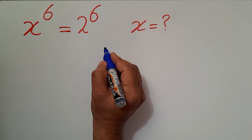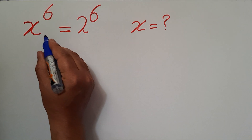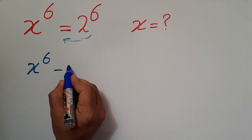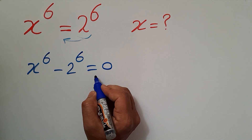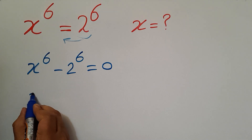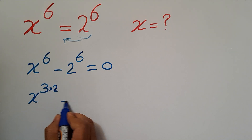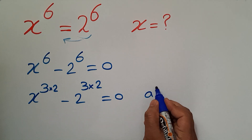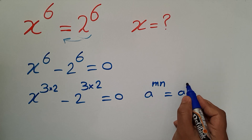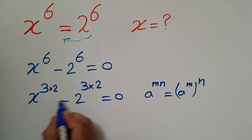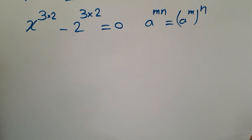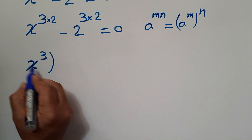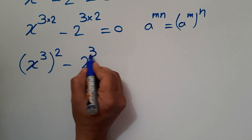Are you ready to solve? Let's go ahead and get started. In the first step, let's move this term to the left hand side: x to the power of 6 minus 2 to the power of 6 equals 0. Since 6 can be written as 3 times 2, we apply the rule a to the power of m·n equals a to the power of m to the power of n.